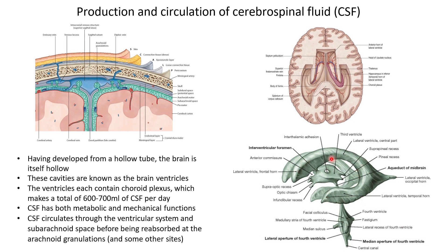Each of the ventricles contains a structure known as the choroid plexus. We can see it on this diagram — it is present within each of the ventricles. In the larger ventricles such as the lateral ventricles it is bigger than in the smaller ones such as the third ventricle, but all of the brain ventricles possess a choroid plexus. It is richly vascularized and in life this highly vascular structure produces something on the order of six to seven hundred millilitres of cerebrospinal fluid per day.